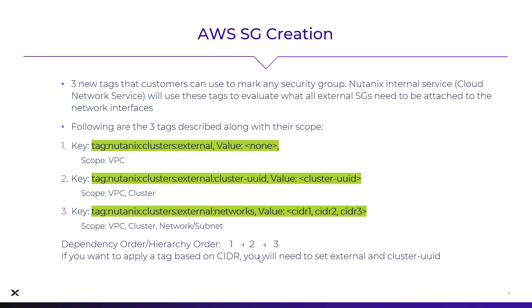These tags work in a hierarchical order, meaning that if you want something at the cluster level, you need to have the first tag in place. So if you wanted to limit access at the cluster level, you would carry on and add: tag:Nutanix:clusters:external:<cluster UID>, filling in your cluster UID, which you can easily find from the NC2 portal menu. That would then protect at an individual cluster level, so you could limit access further that way.